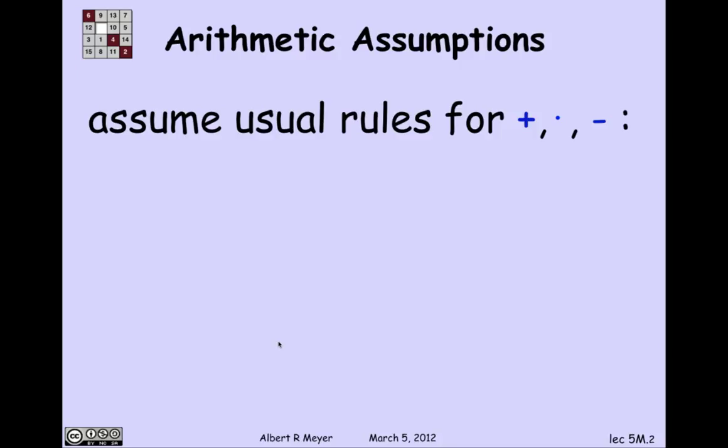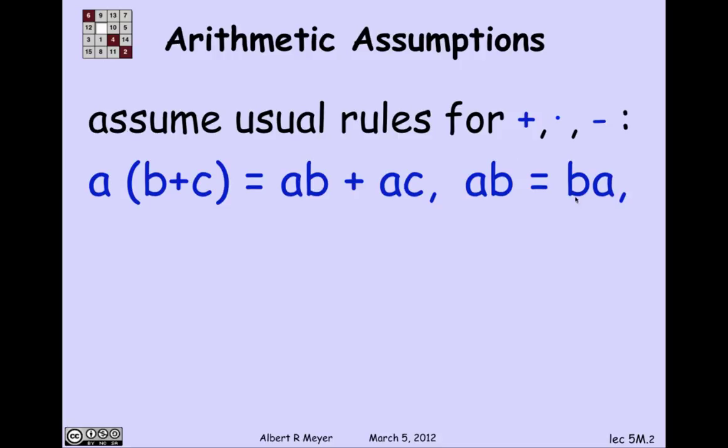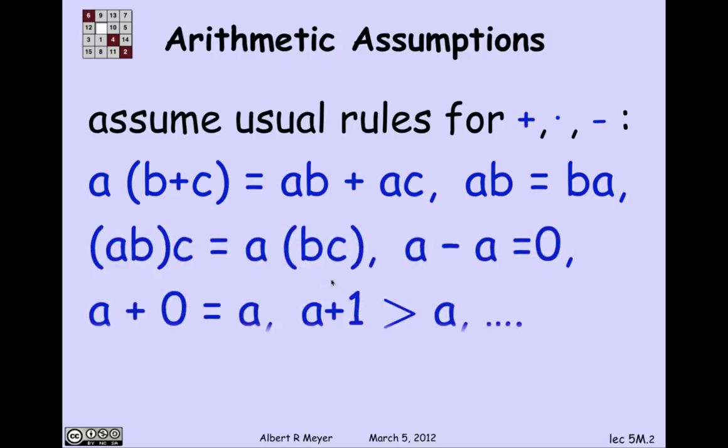So let's begin by stating the rules of the game. We're going to assume all of the usual algebraic rules for addition and multiplication and subtraction. So you may know some of these rules have names. Like the first equality is called distributivity of multiplication over plus, times over plus. And then the second rule here is called commutativity of multiplication. And here are some more familiar rules.